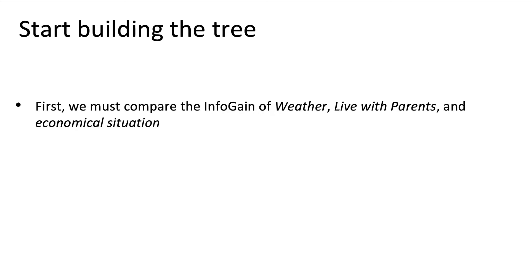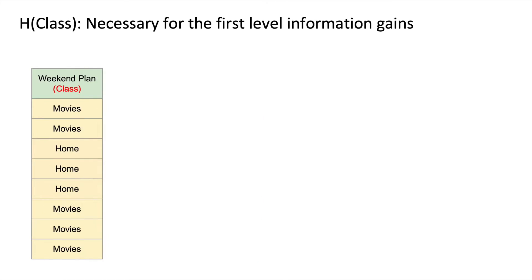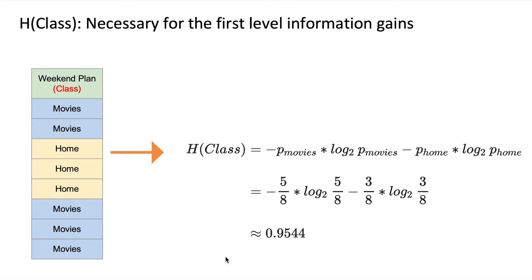To start building the tree, the first thing we need is to compare the information gains of the three variables. For that, we first need to calculate the entropy of the class — the 'weekend plans' column. It can take two values, and the proportions are five for movies and three for home, so it's five divided by eight and three divided by eight. Applying the entropy formula, we obtain the value 0.9544.